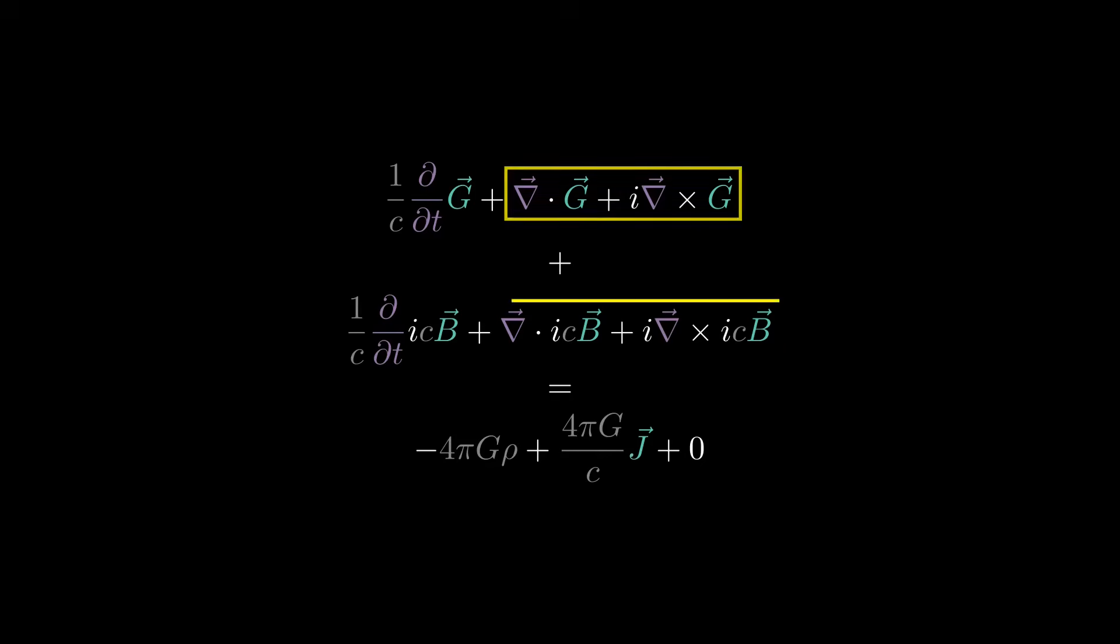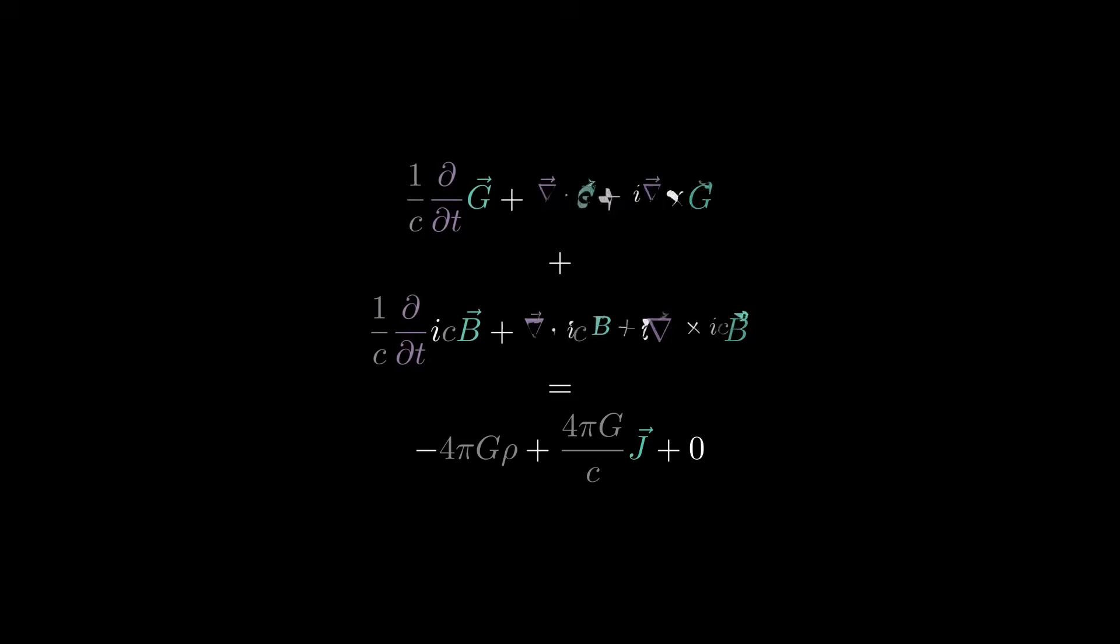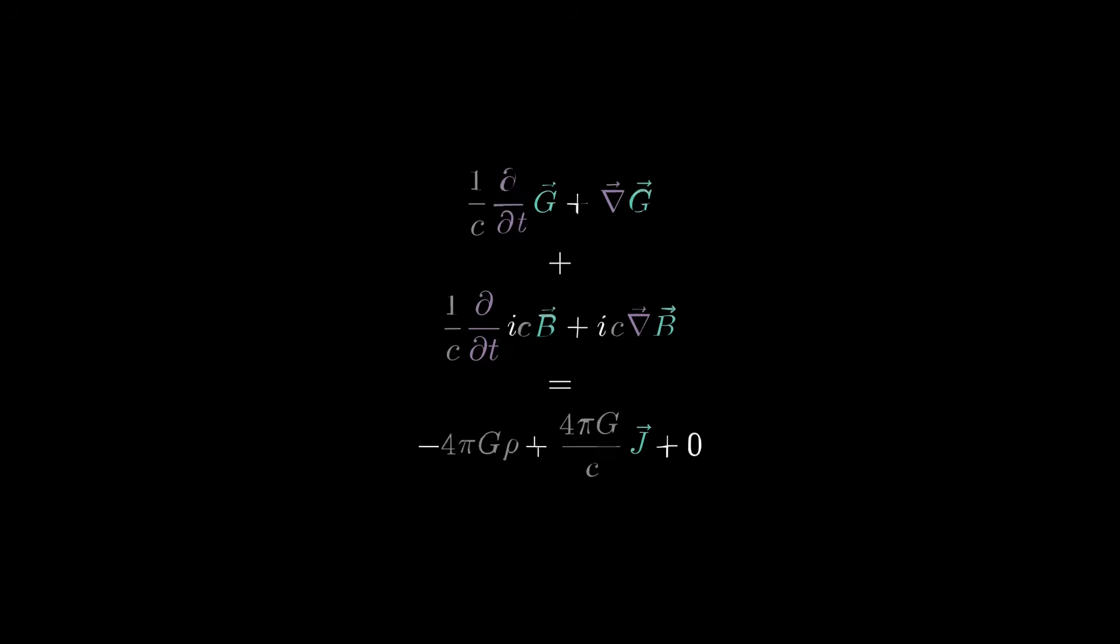These are the geometric product between vectors. Let's simplify that. And one last simplification takes us here.